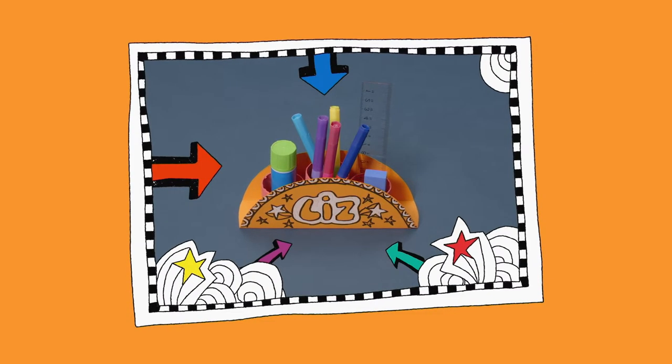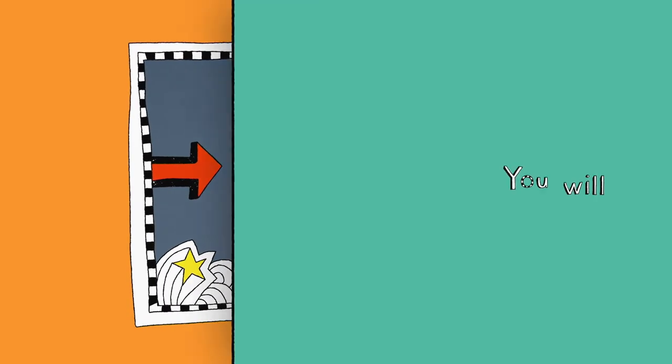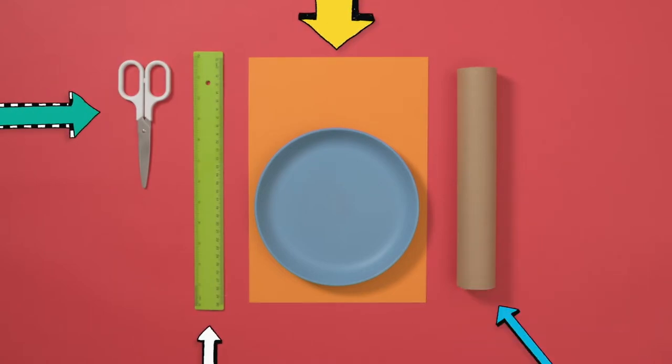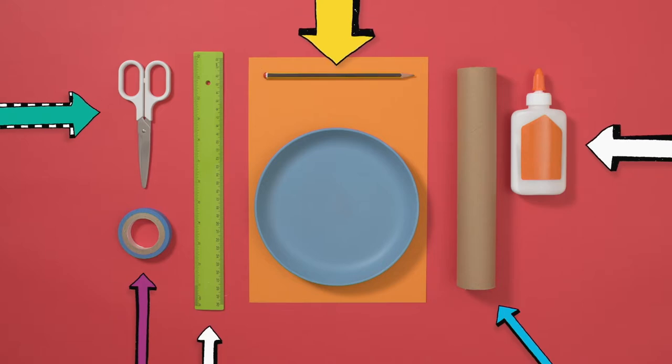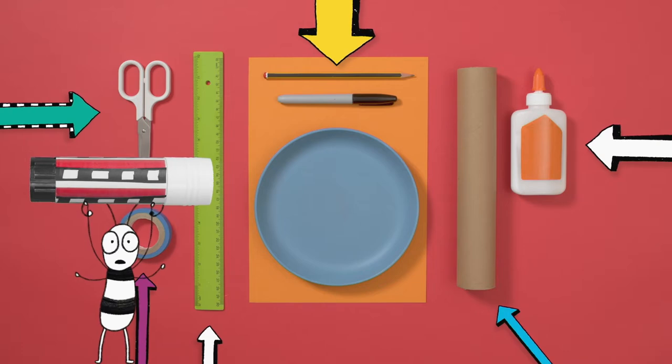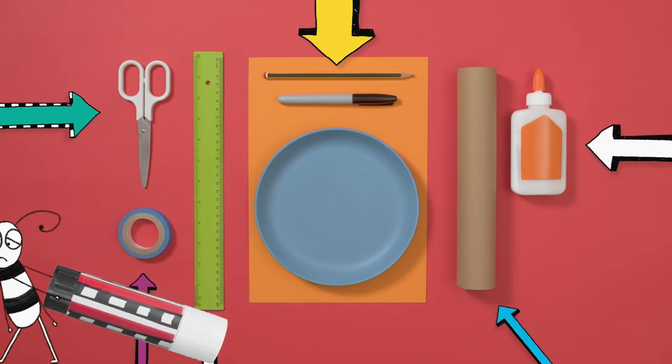Let's make our own pencil holder. You will need some colored cardboard, a cardboard tube, a plate, a ruler, some scissors, be careful with scissors, sticky tape, PVA glue, and a pencil and pen. And a glue stick? Sorry, we don't need a glue stick. Alright.